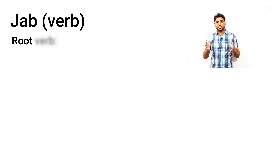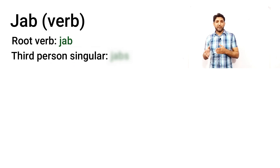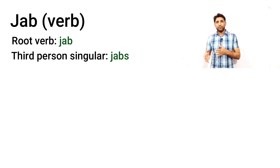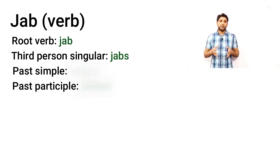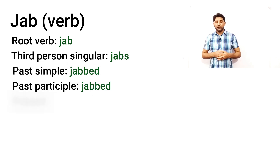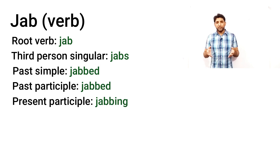The word is 'jab.' It is both a noun and a verb. Let's use this word as a verb in our sentences, but first the word forms: the root verb is 'jab,' the third person singular is 'jabs,' the past tense and past participle are 'jabbed,' and the present participle is 'jabbing.'